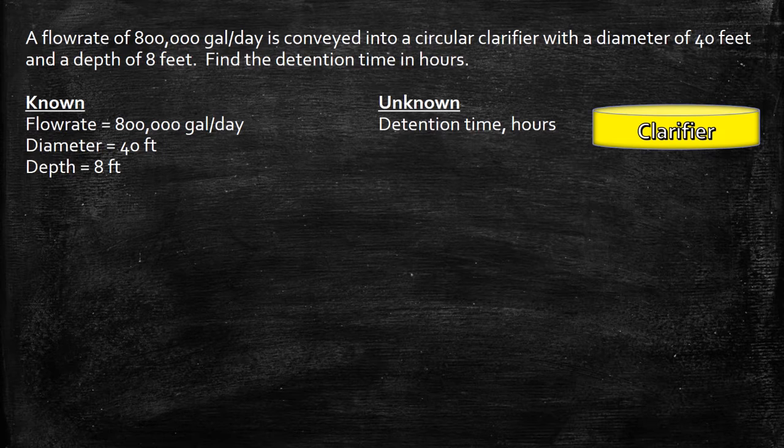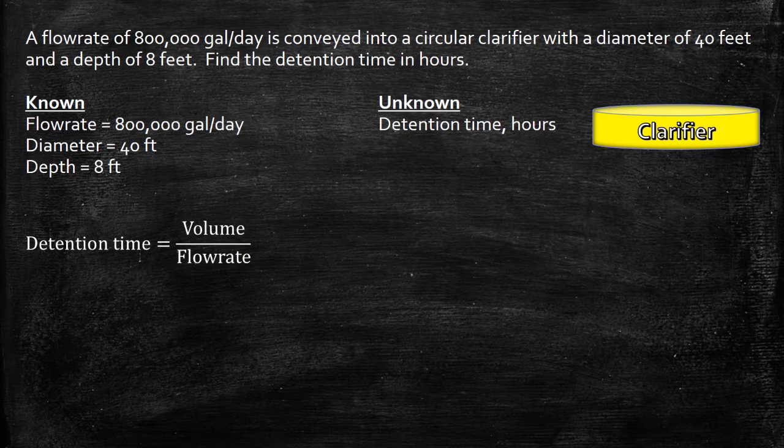Next, write down the formula you need to solve this problem. They're asking for the detention time so let's write down that formula: Volume divided by flow rate. Do we have volume and flow rate? If you look under the knowns, we're given the flow rate but not the volume.